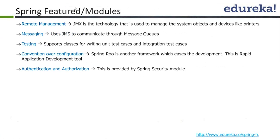We have a remote management module — JMX. JMX is the technology used to manage system objects and devices like printers. JMX stands for Java Management Extensions. You can treat your network printer as a Java object and monitor it through Java using JMX. There are many other things that can be achieved using JMX — for example, you can have control over your JVM and monitor exactly how your JVM is working.